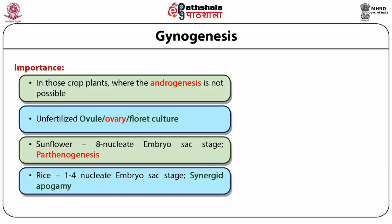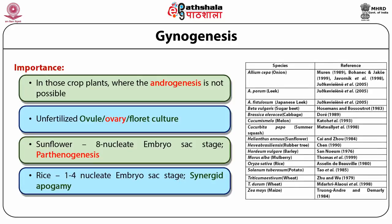In rice, the best stage is to culture at the 1–4 nucleate embryo sac stage. Even here, when it forms a sporophyte, the embryo sac undergoes full development and becomes a mature embryo sac, and then only it undergoes sporophyte development. The first discovery of gynogenesis was done in 1974 by Nitzsche in barley. Today we have about 25 species of plants, including major crop plants, where gynogenesis has been possible.